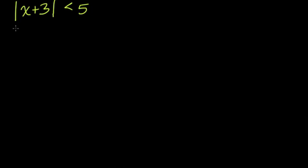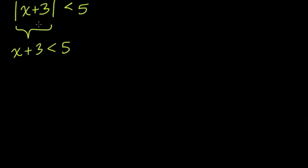What does that mean? This means you're looking at values of x where x plus 3's distance from 0 is less than 5, because absolute value refers to distance. We want to know what values of x can you plug into this equation where your distance, when you add 3 to x, is still less than 5. In order for x plus 3 to have distance from 0 less than 5, x plus 3 itself has to be less than 5. For example, if x plus 3 equals 6, then the distance from 0 would be 6, and that wouldn't work.